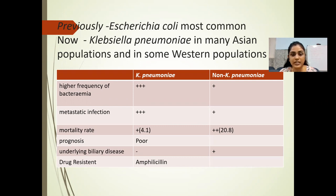Key differences between Klebsiella pneumoniae and non-Klebsiella pneumoniae infections: higher frequency of bacteremic metastatic infection is present in Klebsiella compared to non-Klebsiella. However, mortality rate is higher in non-Klebsiella cases. Prognosis is poor in Klebsiella pneumoniae infections, while underlying biliary disease is more common in non-Klebsiella pneumoniae infections. Drug resistance to ampicillin is present in Klebsiella pneumoniae infections.